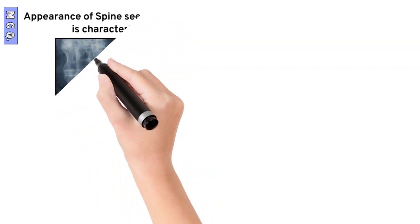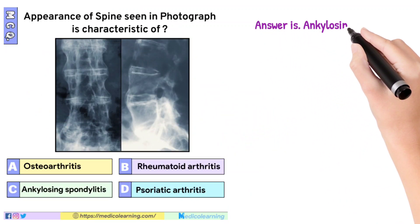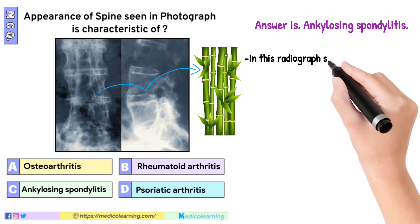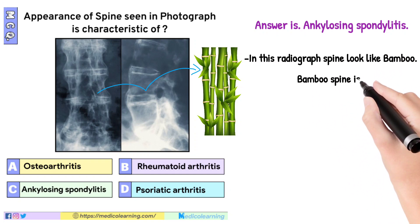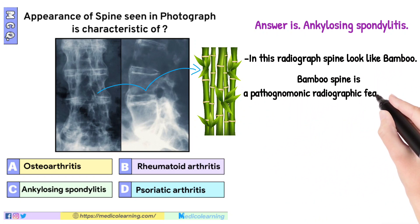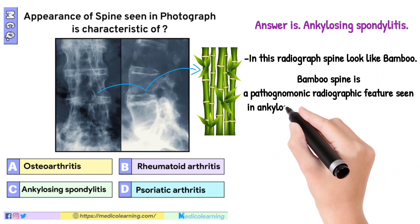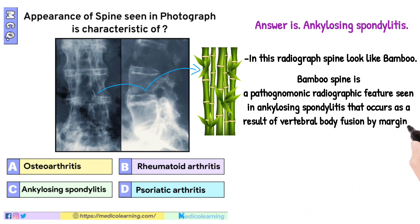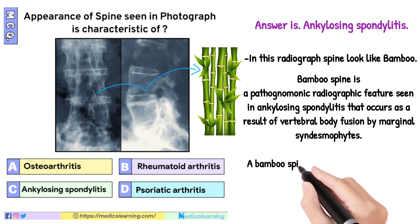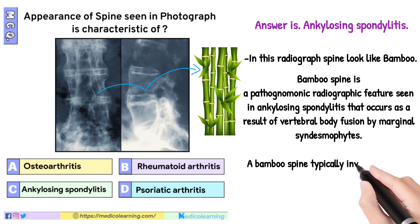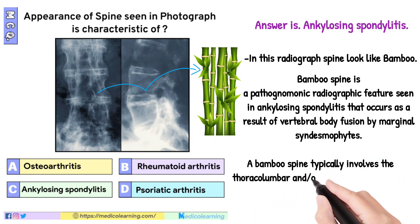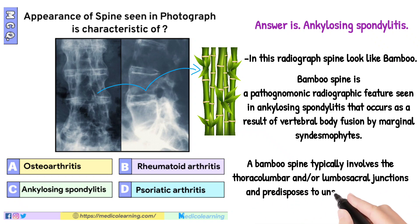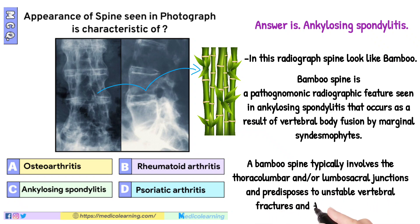In this question the answer is Ankylosing spondylitis. In this radiograph the spine looks like bamboo. Bamboo spine is a pathognomonic radiographic feature seen in ankylosing spondylitis that occurs as a result of vertebral body fusion by marginal syndesmophytes. It typically involves the thoracolumbar and/or lumbosacral junctions and predisposes to unstable vertebral fractures and Anderson lesions.